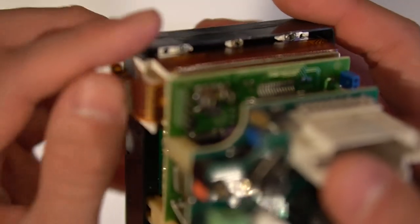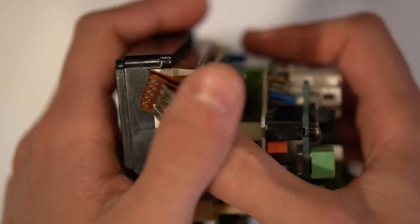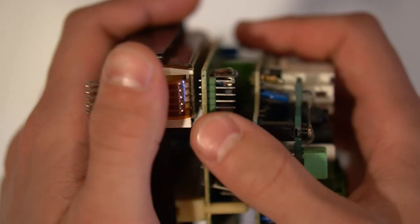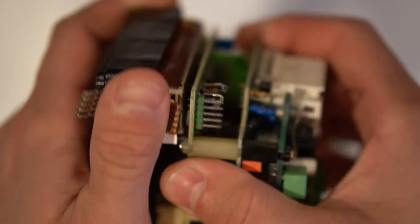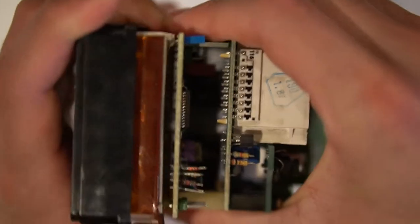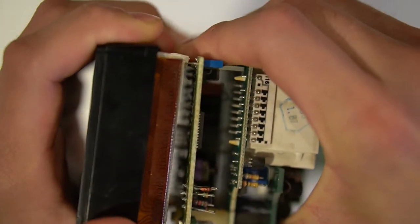Now we're going to separate the front LCD screen and button assembly from the rear electronics. It's really important that you make sure to hold the ribbon cable out of the way with your thumb like you see me doing here. If the back electronics separate quickly they can catch the ribbon cable and damage it. Now firmly grasp both halves and pull them apart as evenly as possible.